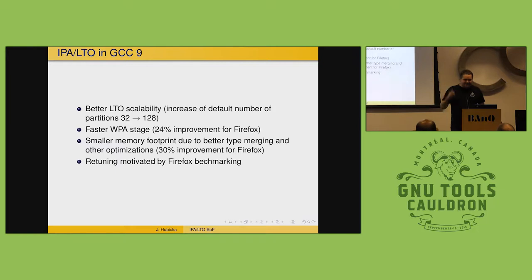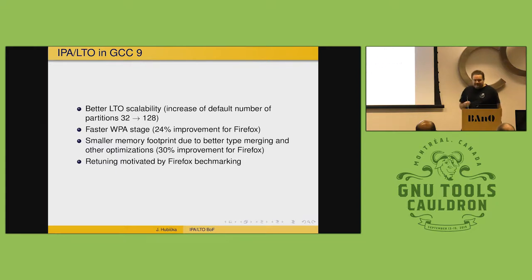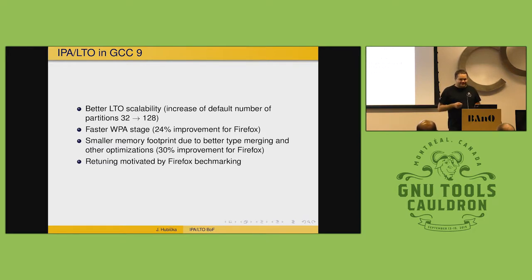What happened is that we released GCC 9, which I think is an important release in this respect, because we basically solved the scalability problems for a higher number of CPUs, which was making me nervous for a while. Also, it was the first time we did some serious retuning on a bigger project.